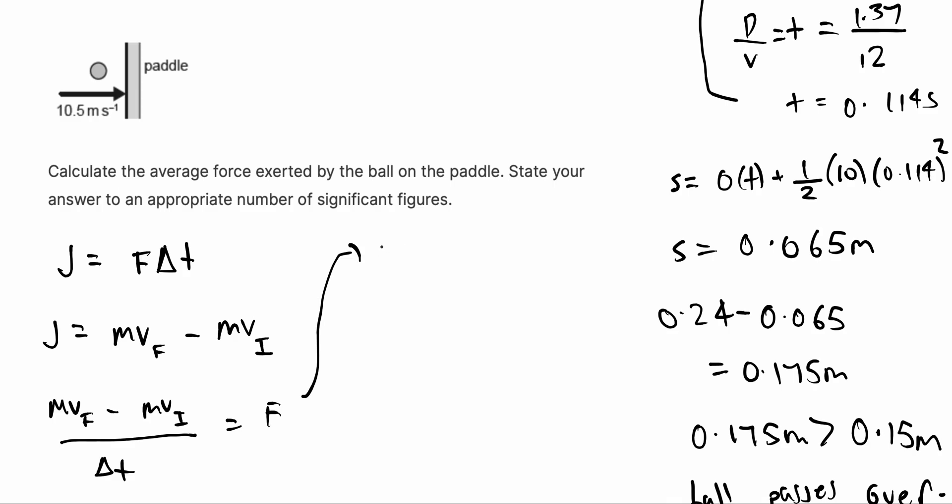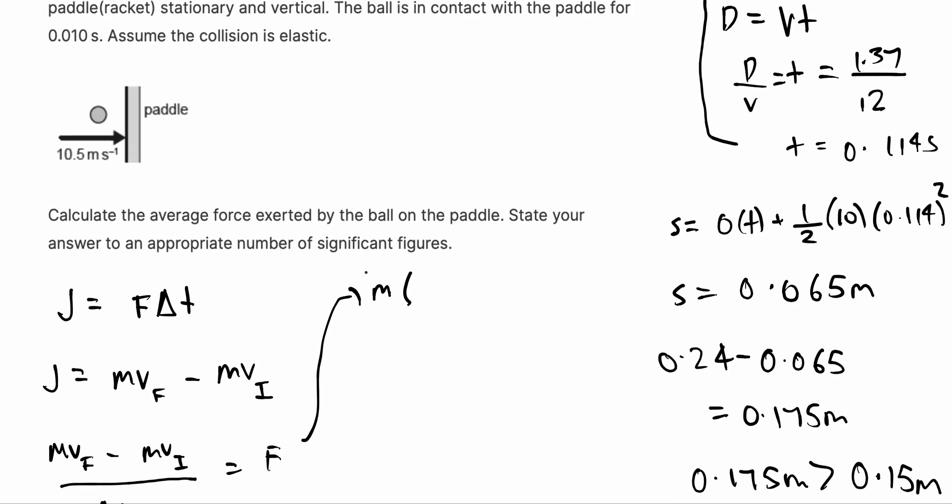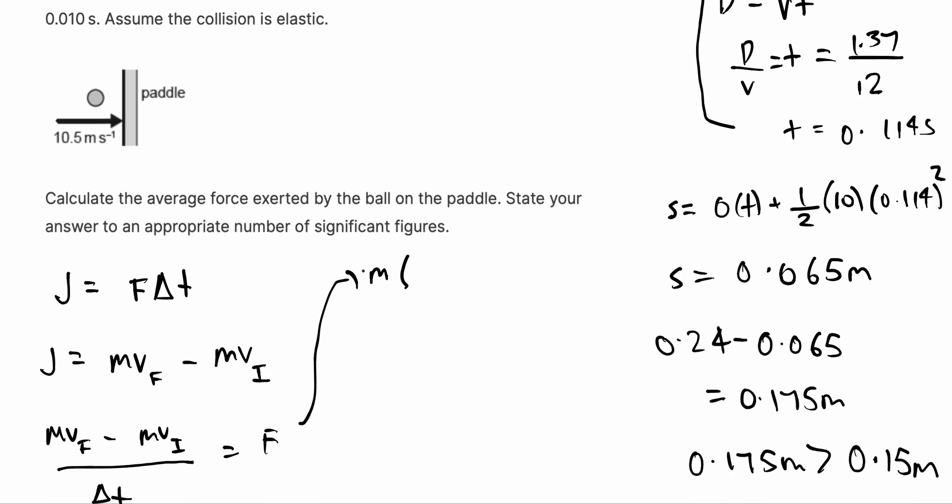Momentum is mass times velocity. The mass is common. And the velocity, we know it's an elastic collision, so the velocity stays the same but the direction changes. First, at one instance, it's going 10.5 meters in this direction, and it bounces back with the same magnitude of velocity but in the opposite direction. So we can say final, which is 10.5 meters per second, minus negative 10.5. Because the direction changes but the magnitude stays the same.